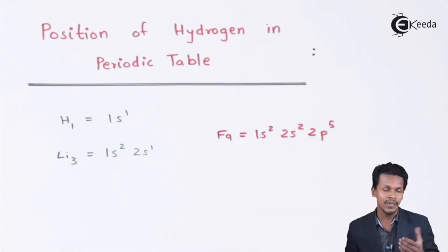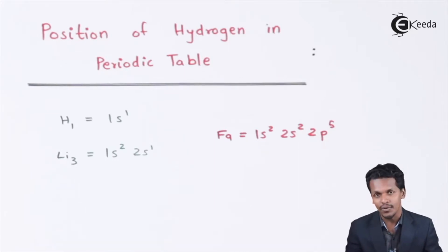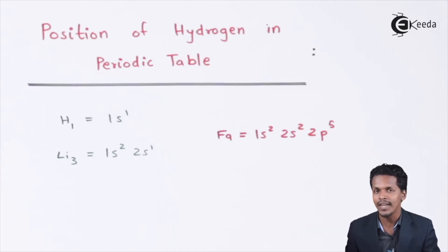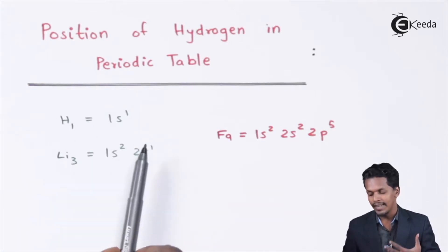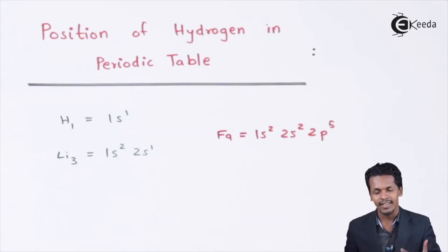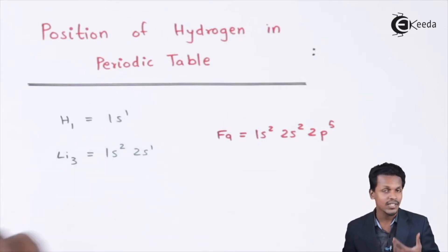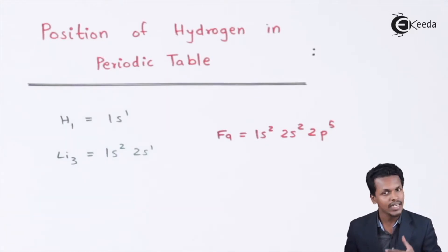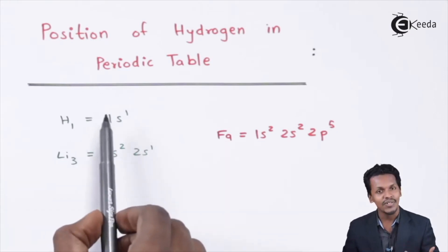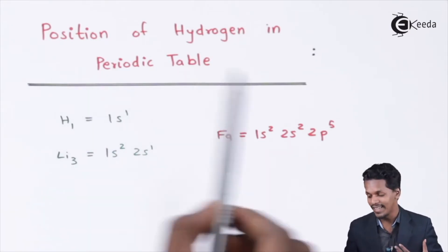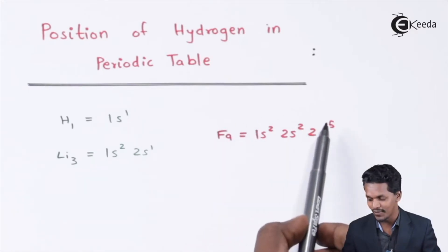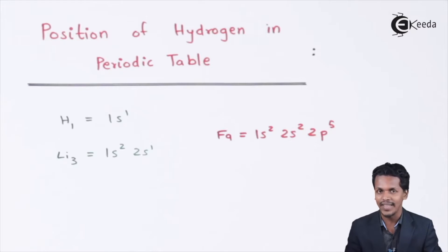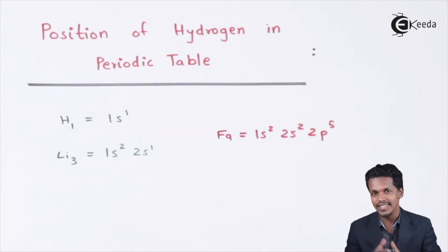Lithium can lose one electron easily to achieve helium-like configuration. But hydrogen cannot lose its electron very easily — even if it does, it converts into a unipositive ion. Similarly, fluorine cannot easily lose its electron either. So we can say hydrogen exhibits properties of both the s-block and the p-block.